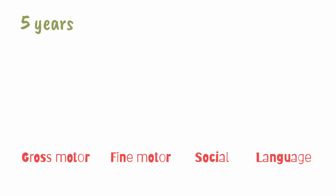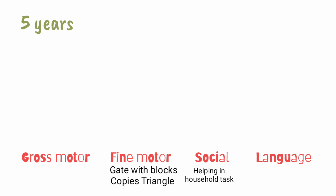From this story we pick up the important points: at five years of age, under fine motor comes making a gate with blocks and copying a triangle; under social comes helping in household tasks; and under language comes asking the meaning of words. In this way we are going to see stories for all age groups. I hope you are able to link the story with the milestone.